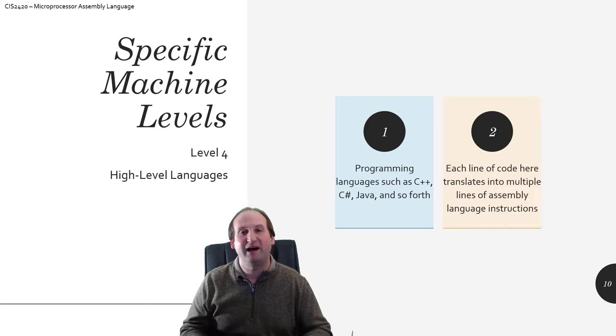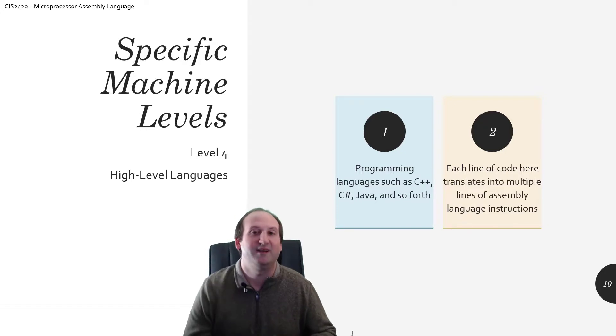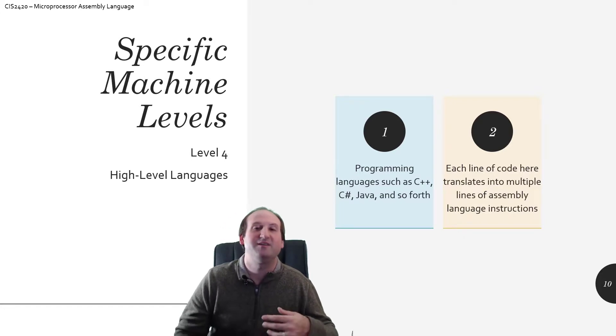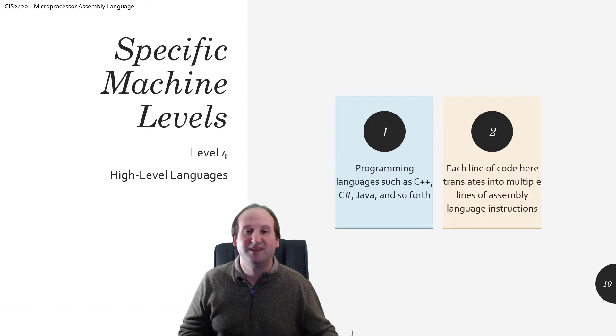So level four, high level languages, languages that we are used to programming in, C++, C Sharp, Java, those are the big three here at the College of DuPage. Python is a new fourth one that we're starting to bring into the works. It might as well, it's number one, number two language in the world.